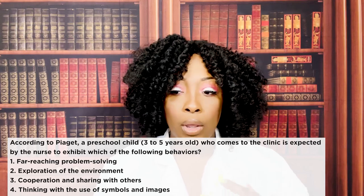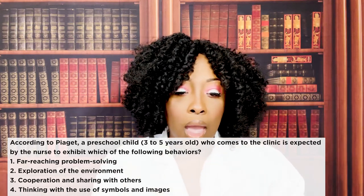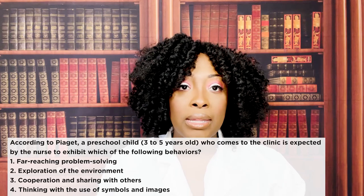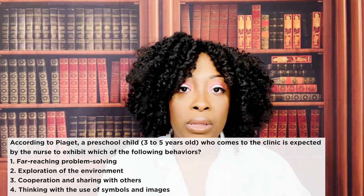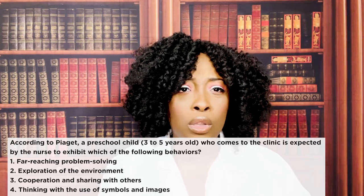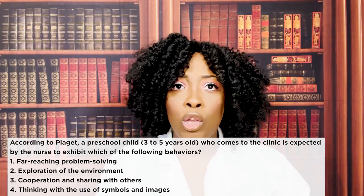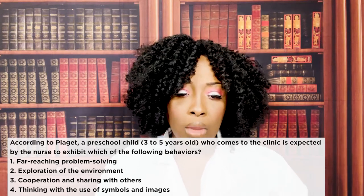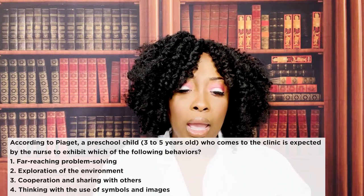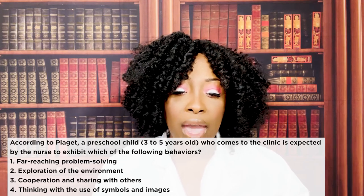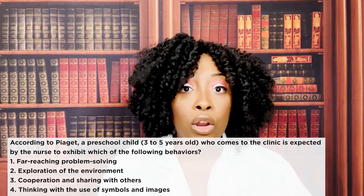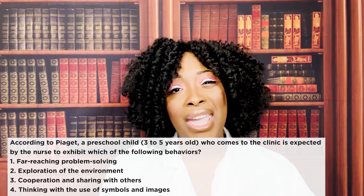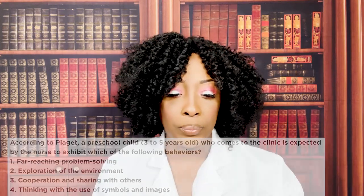The wrong answer choices: one, far-reaching problem solving — this is formal operations, seen in the older child to adult. Two, exploration of the environment — this is the sensorimotor stage, birth to two years old, where they learn about their environment through their senses. Three, cooperation and sharing with others — this is the concrete operations stage, around ages seven to eleven.